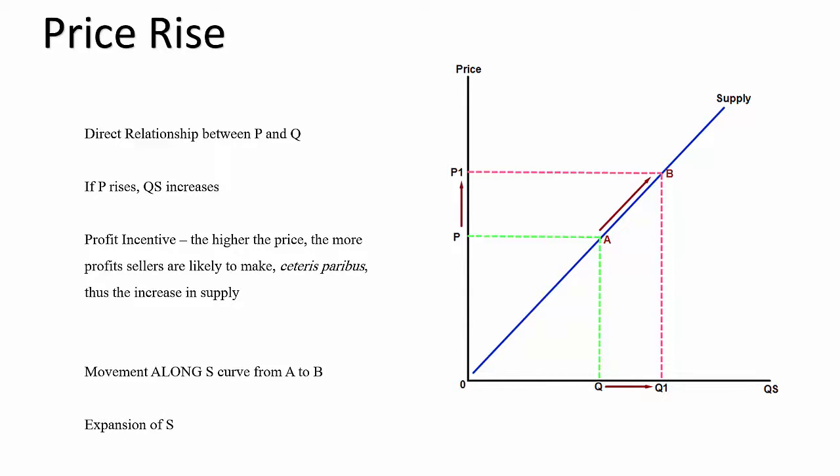As with the demand curve analysis in the previous videos, we move along the supply curve if there's just a change in price and no other external variable has changed. If it's an increase in the amount of supply we call that movement an expansion of supply. The movement from A to B represents an expansion of supply.